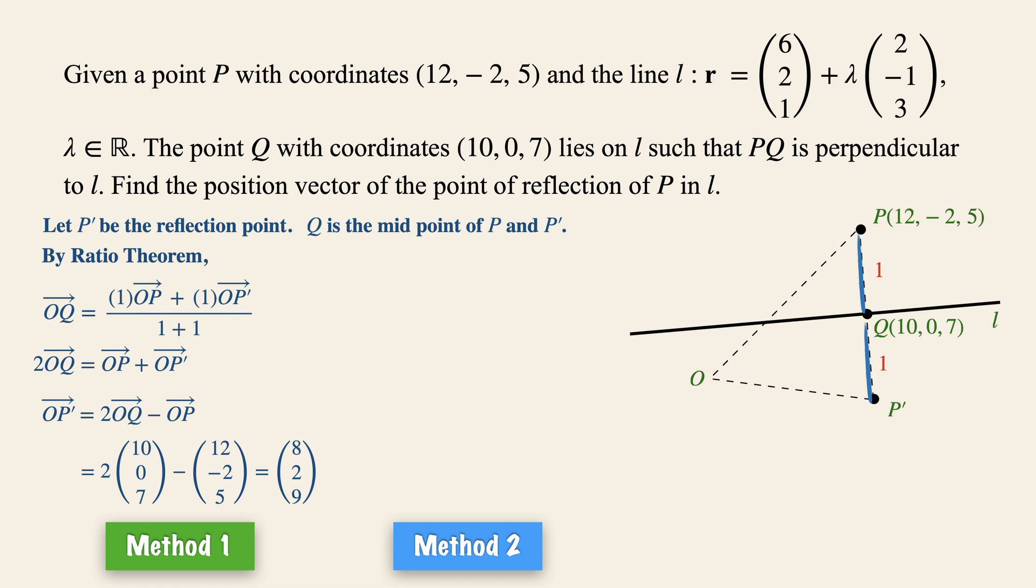Now vector PQ equals vector QP' for the reason mentioned above. Instead of the ratio theorem, we are going to split these into its component position vectors, namely vector OQ minus vector OP.